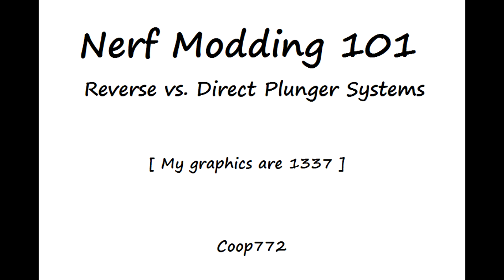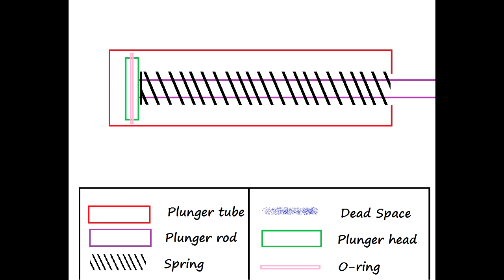I'm Koop and this is a short explanation of the difference between direct plunger tube systems and reverse plunger tube systems in reference to Nerf blasters. Both systems use common components even though their form and orientation varies.